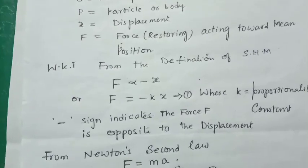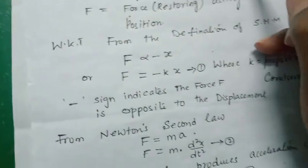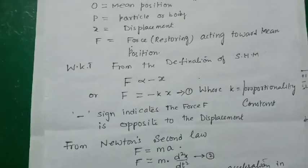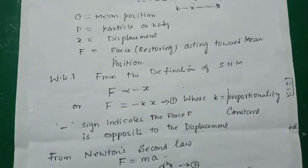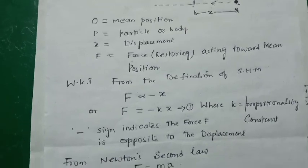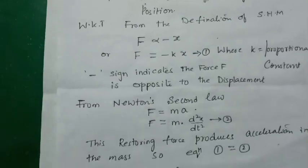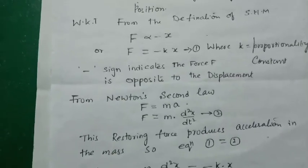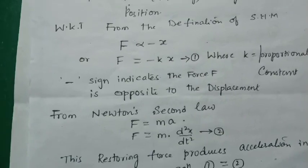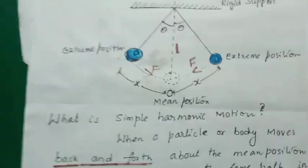From the definition of simple harmonic motion, the restoring force is directly proportional to the displacement. More displacement means more force acting on the bob towards the mean position. We take a negative sign because the force F is opposite to the displacement. So equation (1) is: F = −kx, where k is the proportionality constant. From Newton's second law, F = ma, and acceleration a is written as d²x/dt².